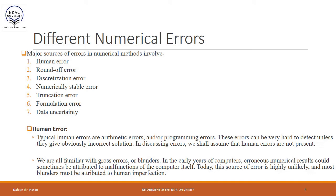Now let's consider different types of numerical errors that occur in practice. The major sources of errors in numerical methods include: human error, round-off error, discretization error, numerical instability error, truncation error, formulation error, and data uncertainty. All of these errors may occur simultaneously, or some of them may occur in a specific program.